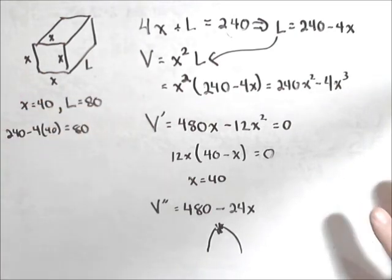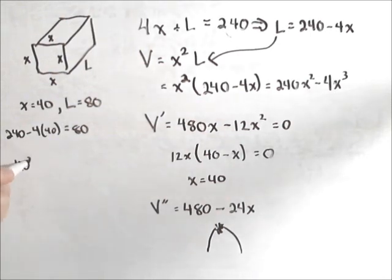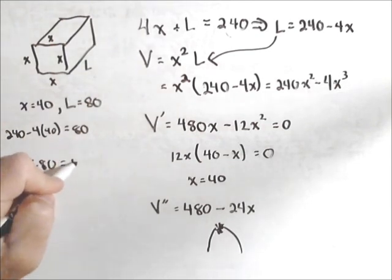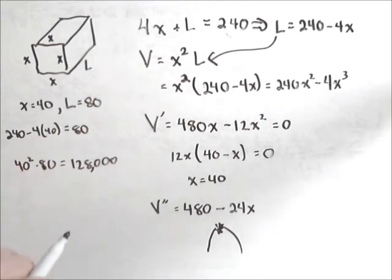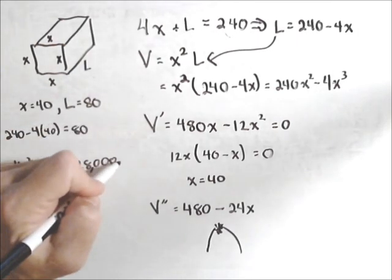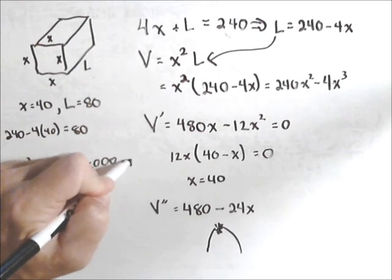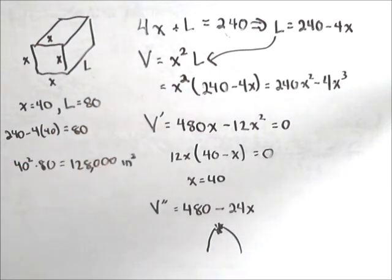And so the volume that would maximize this, or excuse me, our maximum volume is 40 squared times 80. So 40 squared times 80, which is 128,000. And our units were inches, so this is going to be cubic inches. And so that's how we can maximize.